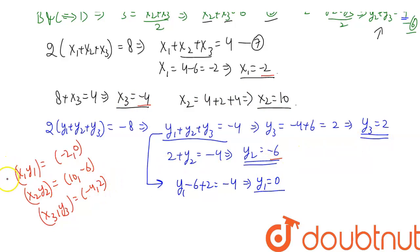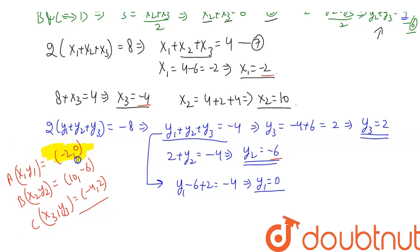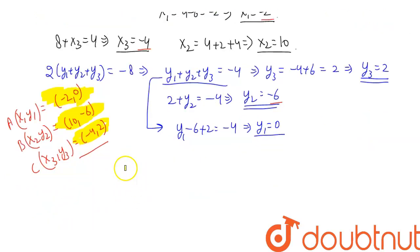So the coordinates of point A (x1, y1) are (-2, 0), the coordinates of point B (x2, y2) are (10, -6), and the coordinates of point C (x3, y3) are (-4, 2). This is our solution. Thank you.